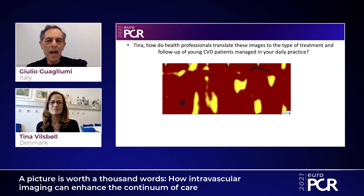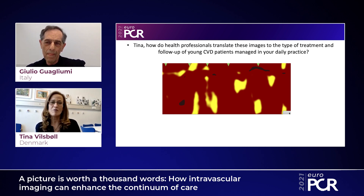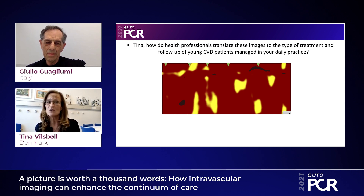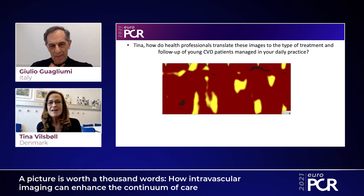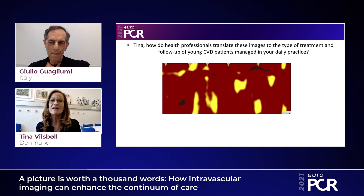The question, Tina, is: how do health professionals translate this picture into the type of treatment, especially when dealing with younger patients in daily practice? For me, I'm always impressed by what cardiologists can do — really sophisticated methods. It's important because this patient is almost 60 years old. We know that having type 2 diabetes and cardiovascular disease cuts approximately 12 years off lifespan compared to a patient without those conditions. Convincing him to take drugs for a disease he can't feel, drugs that may be expensive with side effects, is a real challenge.